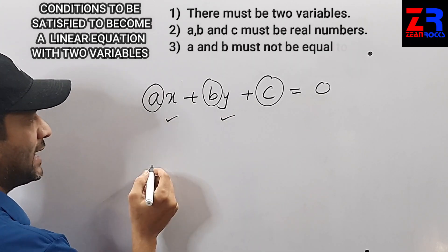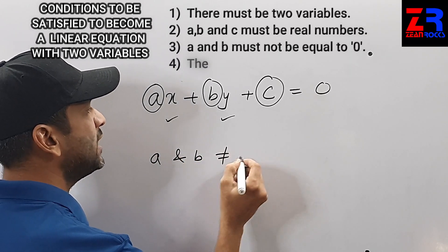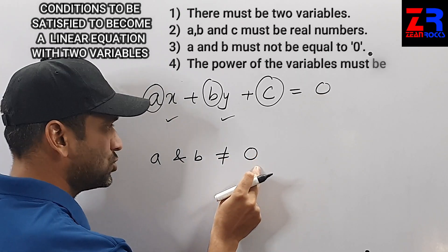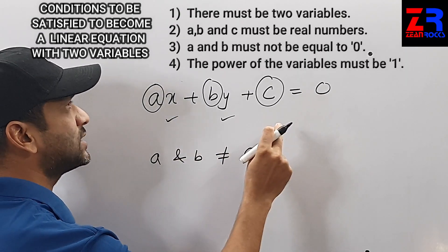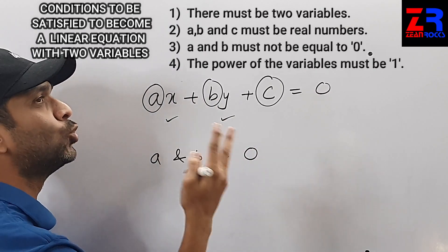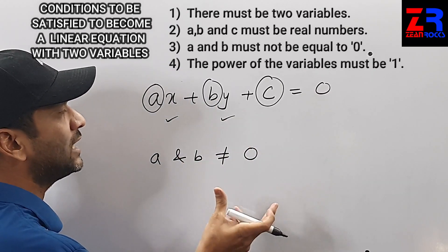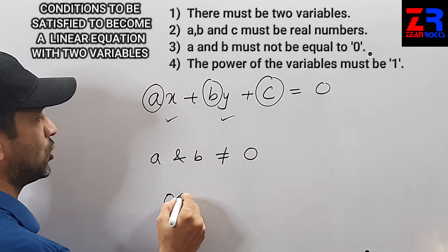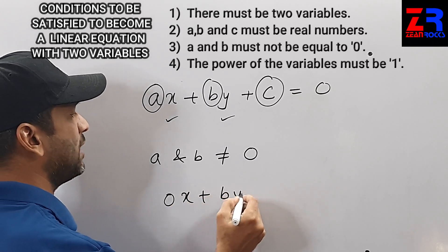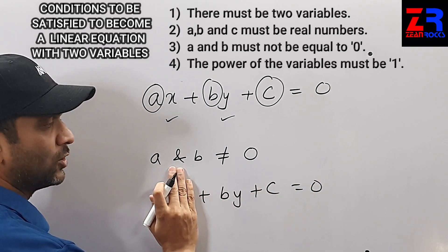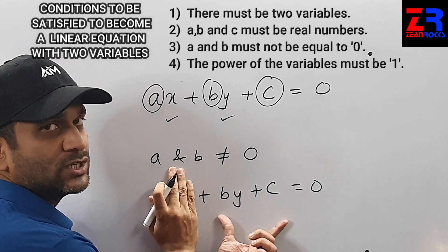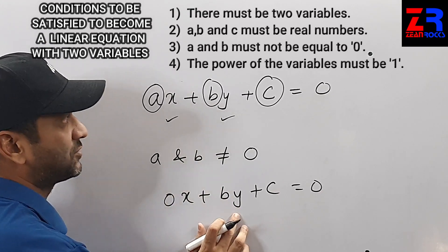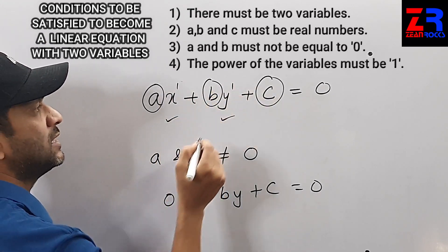One more condition is that a and b must not be equal to 0. If a or b is equal to 0, then this equation may not be a linear equation in two variables — it may become a linear equation in one variable. For example, if a = 0, you get 0x + by + c = 0, which is a linear equation in only one variable y. The power of the variables must be 1.